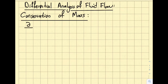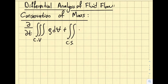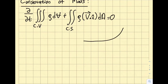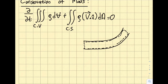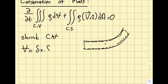I want to refer to the conservation of mass equation we derived for the control volume. The equation looks like the integral of V dot n dA equals zero. In the previous approach, we took a band and picked a particular control volume for analysis. Now the approach will be slightly different — I am going to shrink the control volume, which will bring some advantages.